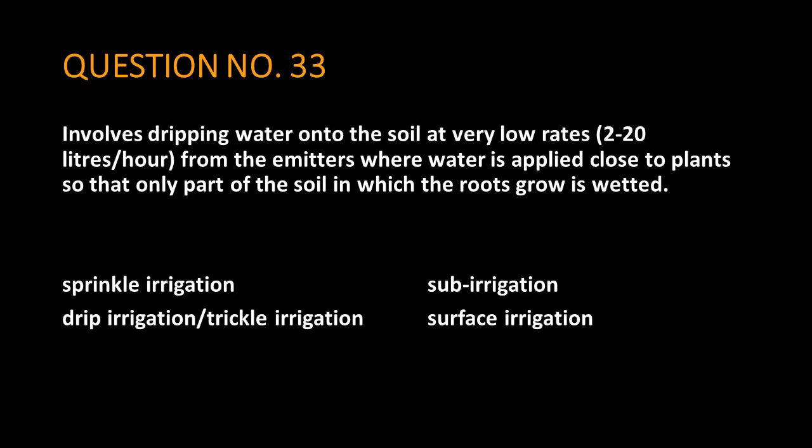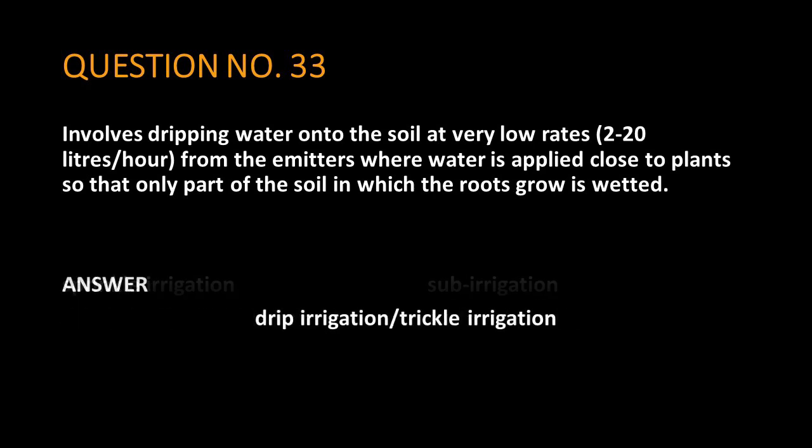Question No. 33. Involves dripping water onto the soil at very low rates, 2 up to 20 liters per hour, from emitters where water is applied close to plants so that only part of the soil in which the roots grow is wetted. The answer is: drip irrigation or trickle irrigation.